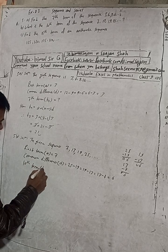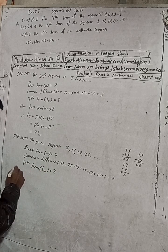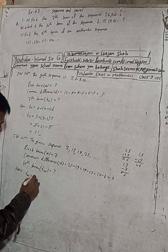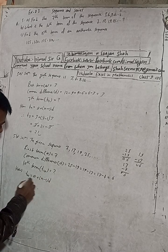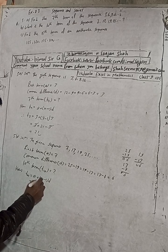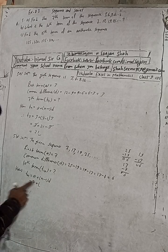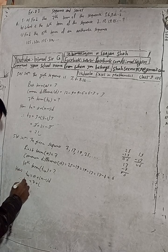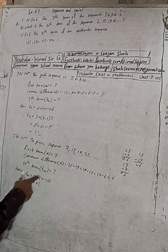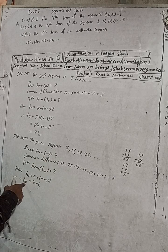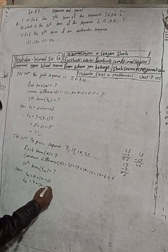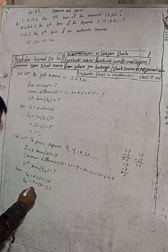We need to find the 10th term, T10. Using T(N) = A + (N − 1) × D: T10 = 7 + (10 − 1) × 6, where A is 7, N is 10, and D is 6.